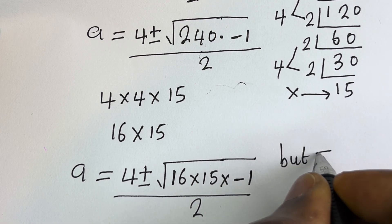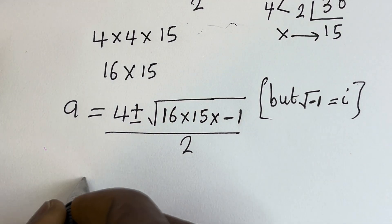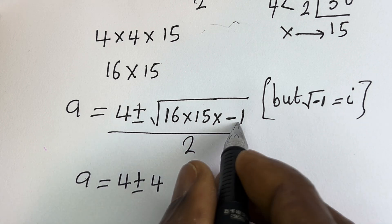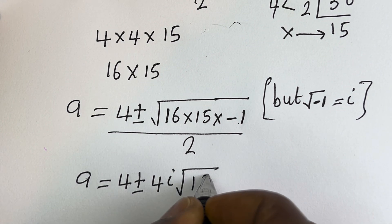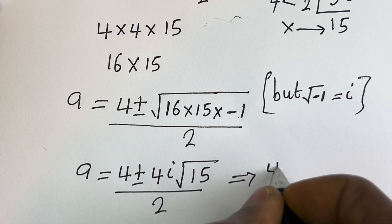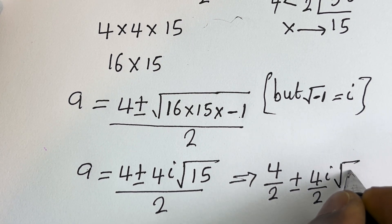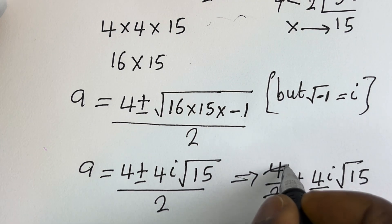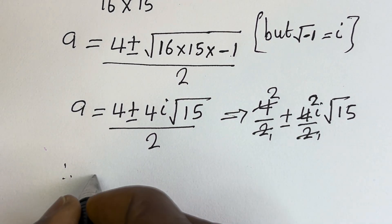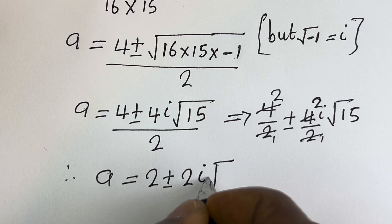Since square root of minus 1 is equal to i, we have a equals 4 plus or minus square root of 16, which is 4, times i times square root of 15, all divided by 2. This simplifies to 4 plus or minus 4i square root of 15, divided by 2, which equals 2 plus or minus 2i square root of 15.